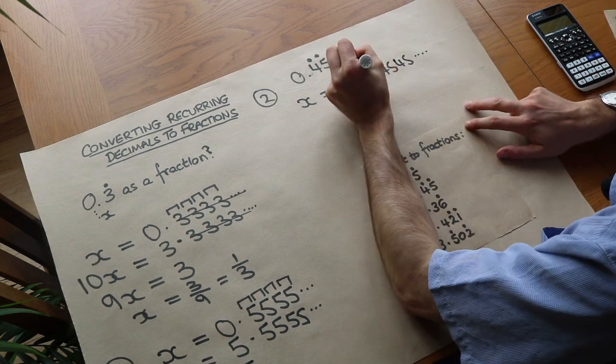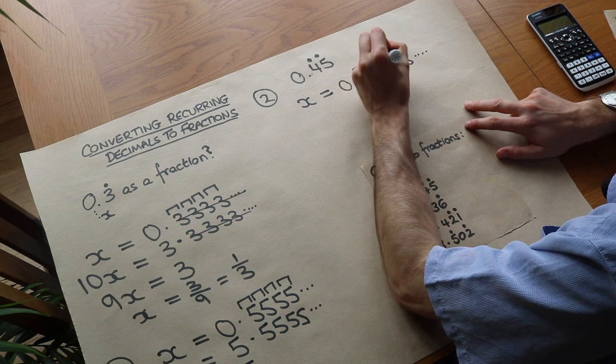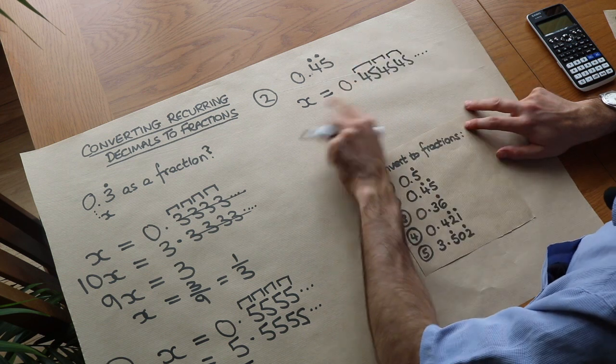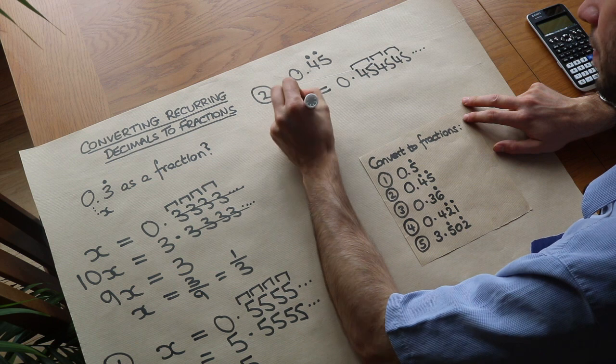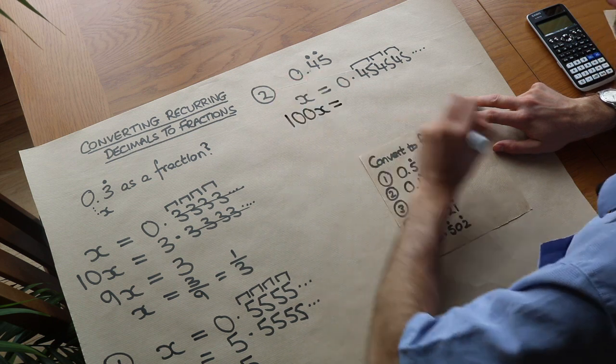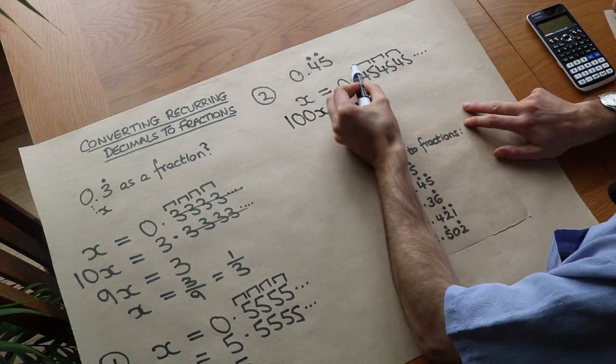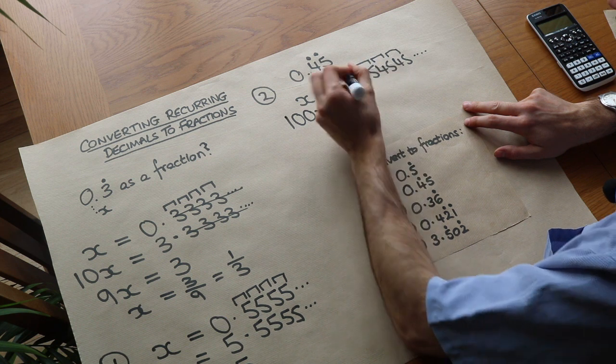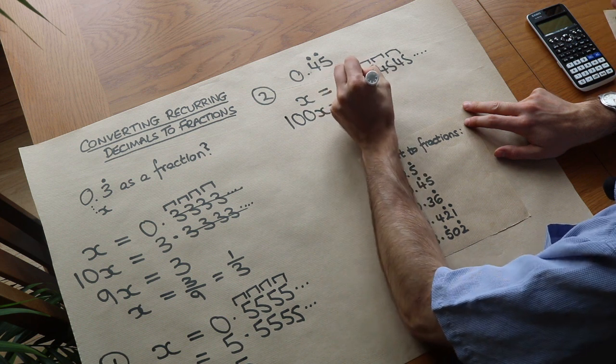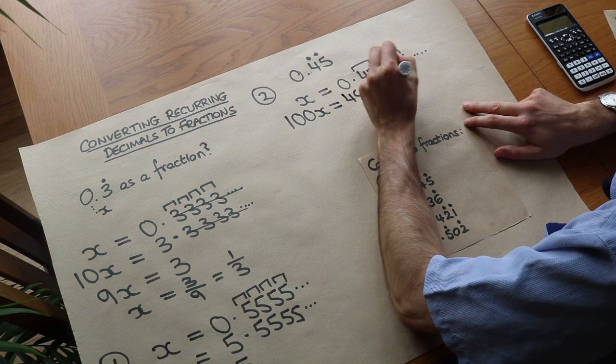And we look how often does it repeat? Well it repeats every two digits. So this time we multiply it by 100. Now if we multiply by 100 it moves the decimal point two places. So it's going to be 45 point, make sure the decimal points are in the same place, 4, 5, 4, 5.